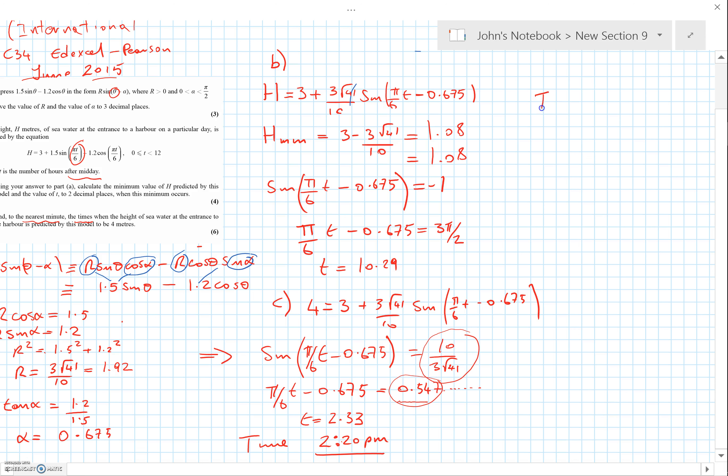We can solve π/6 T minus 0.675, which I keep saying I have stored on the calculator, equals π minus 0.547. I'll leave you to solve all that, but make sure you're careful with it and use non-rounded answers stored on your calculator. T equals 6.24.